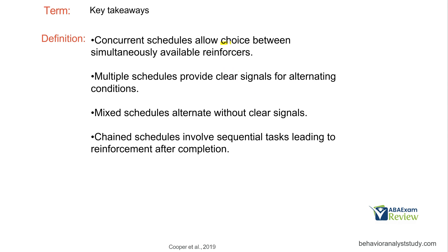Key takeaways: Concurrent schedules offer choice between simultaneously available reinforcers — multiple behaviors occur at the same time and the learner will likely engage in both depending on reinforcement availability. Multiple schedules alternate and provide clear SDs; mixed schedules also alternate but have no clear SD — they're the same except for the presence of the SD. Chain schedules involve sequential tasks leading to reinforcement after completion of each task in order, with the end of one task signaling the start of the next.